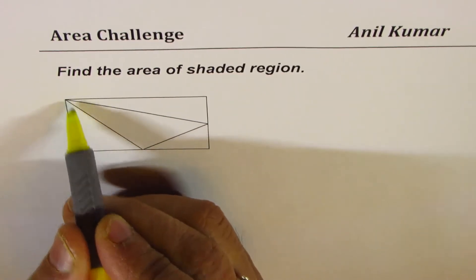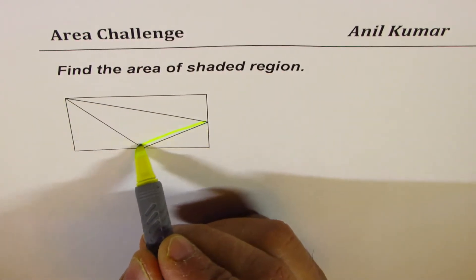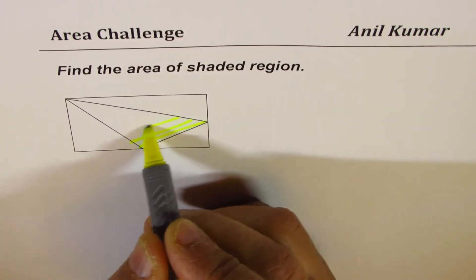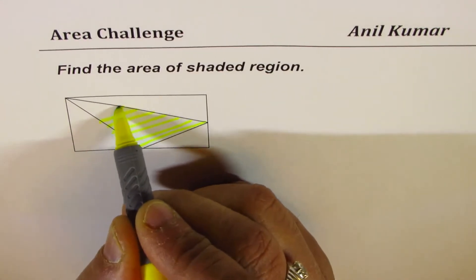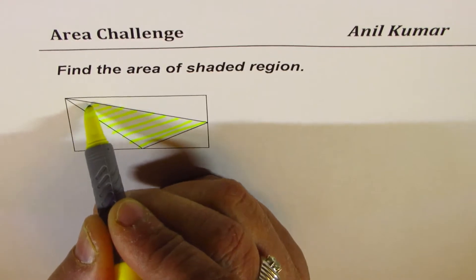I thought I'll complete the diagram so that you understand what we are really trying to do. This is the region for which we have to find the area. This is the region which is shown here in the shaded form.